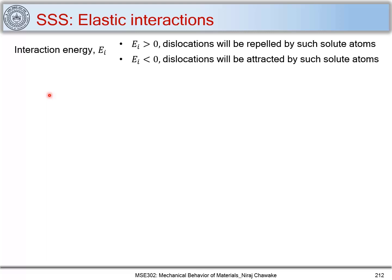Let's look at interaction energy first. When this interaction energy is greater than zero, that is when it is positive, the dislocations will be repelled by such solute atoms. When the interaction energy is negative, the dislocations will be attracted by such solute atoms. Based on the value of this interaction energy, we can find out whether dislocations will be attracted or repelled by solute atoms.